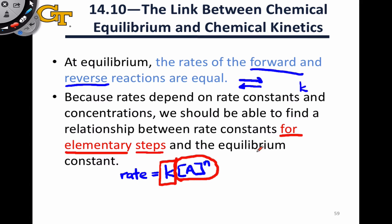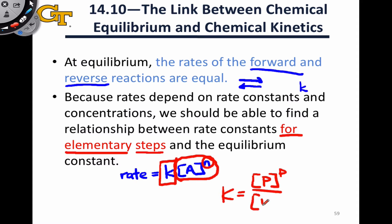It's important for us to specify that we're looking at elementary steps here, because the rate laws for multi-step reactions will have reaction orders — these exponents — that are not necessarily equal to the stoichiometric coefficients. But in the equilibrium constant expression, in the products over reactants idea, these exponents on the concentration or pressure terms are the stoichiometric coefficients in the balanced chemical equation. So what we're going to derive here applies only for reversible processes that are elementary steps, whose rate laws have reaction orders that match the stoichiometric coefficients for the step.